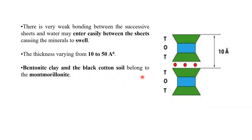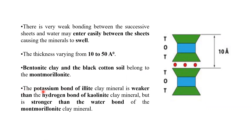Bentonite clay and black cotton soil belong to the montmorillonite group and have highly high swelling properties. The potassium bond of illite is weaker than the hydrogen bond of kaolinite, but stronger than the van der Waals bond of montmorillonite. Therefore, montmorillonite has the highest swelling compared to the other two minerals. This concludes today's topic. Thank you.